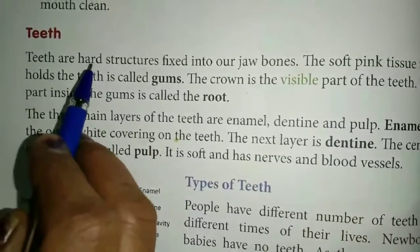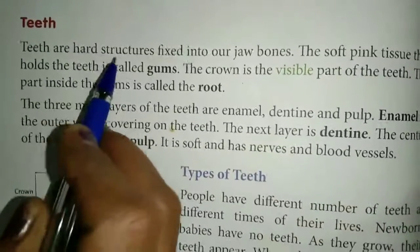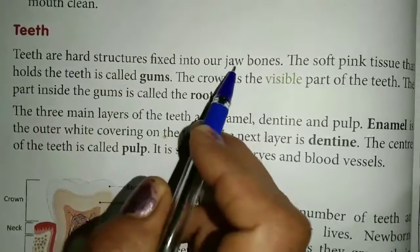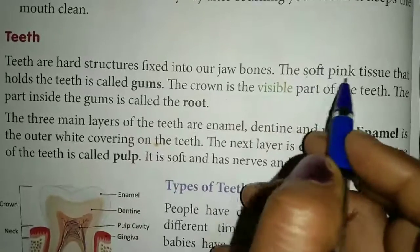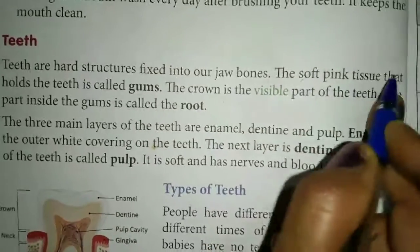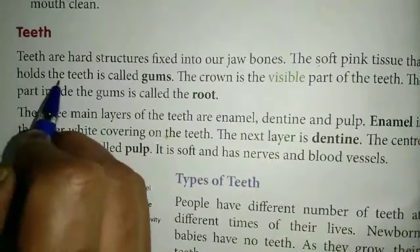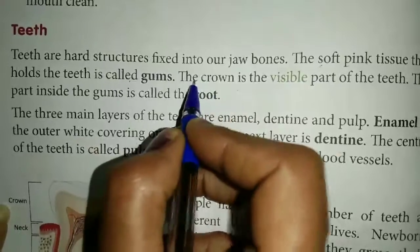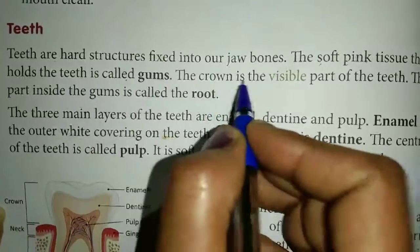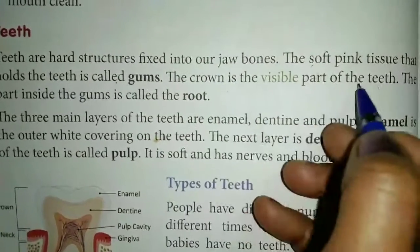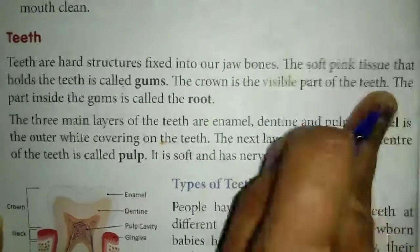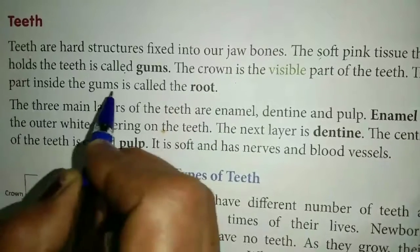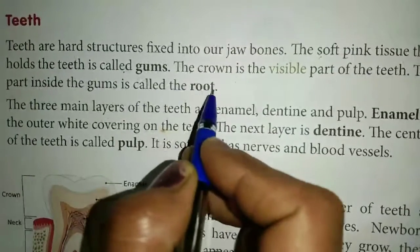Teeth are hard structures fixed into our jaw bones. The soft pink tissue that holds the teeth is called the gum. The crown is the visible part of the teeth. The part inside the gum is called the root.